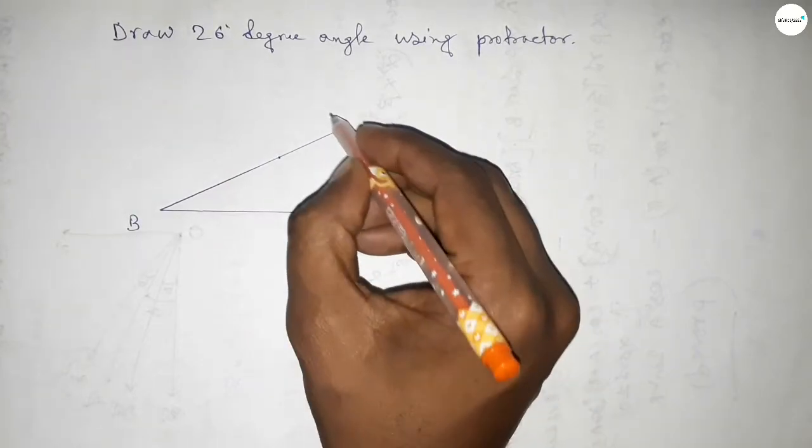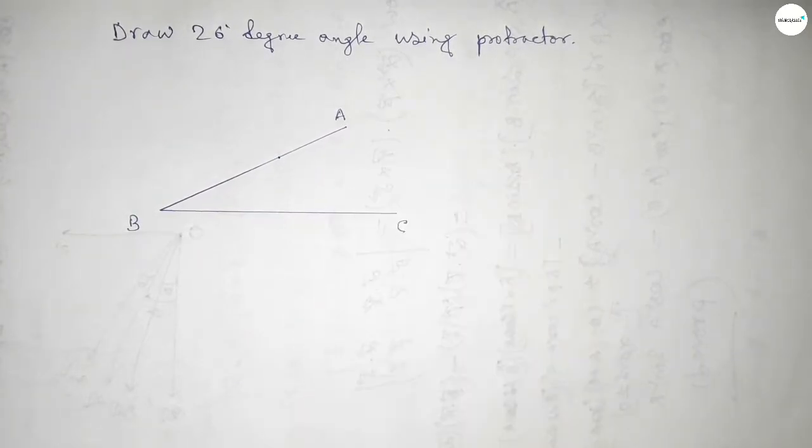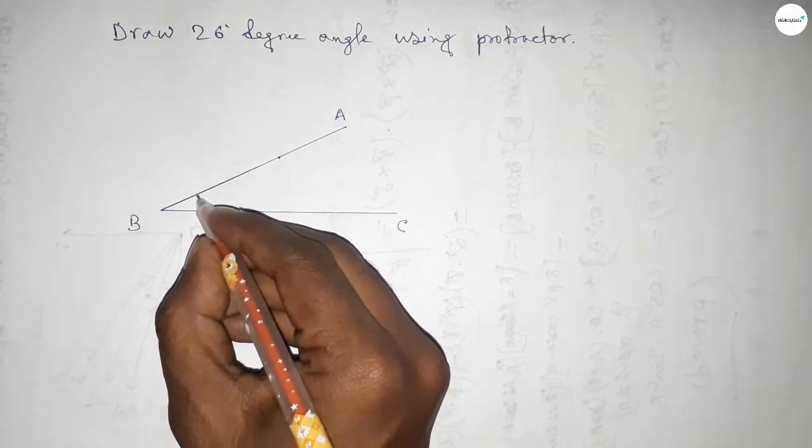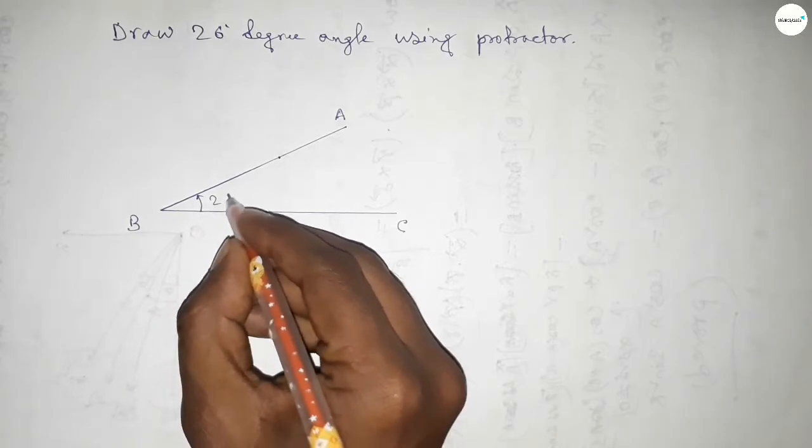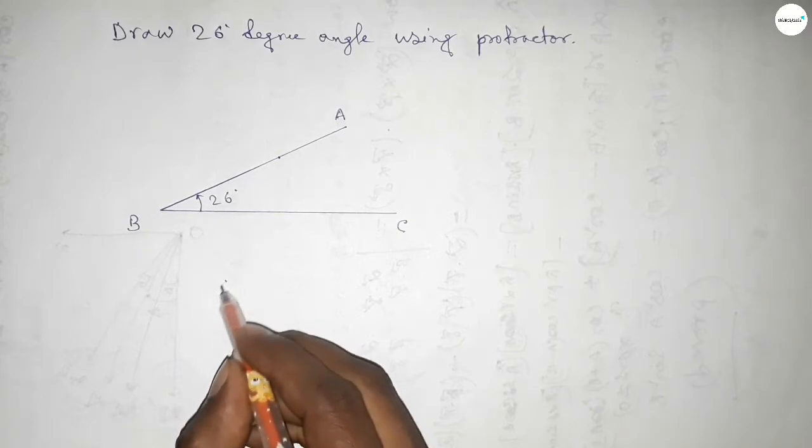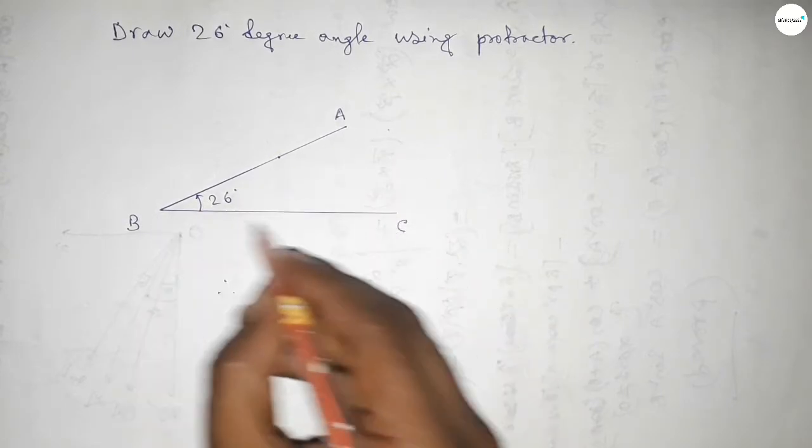And taking here a point. So angle ABC up to this is 26 degree angle. So therefore angle ABC up to this is 26 degree angle.